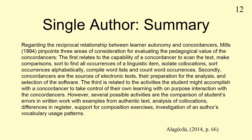Citation within the text of a document refers the reader to an alphabetical bibliography or reference list at the end of the article. The surname of the author and the date of publication are inserted at the appropriate point in the text. If the name of the author appears in the text, cite only the year of publication in brackets. For example, regarding the reciprocal relationship between learner autonomy and concordances, Mills (1994) pinpoints three areas of consideration, etc. The rest of this paragraph is a summary reporting the ideas from Mills, 1994.